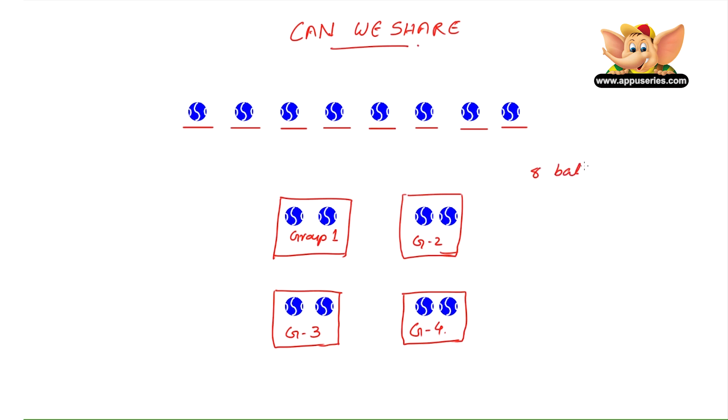So we have divided these eight balls into four equal groups, right? So how many balls are there now in each group? We have two balls in each group. So eight balls were divided into four groups. And each group now has two balls. So if we write this as a problem, it would be eight divided by four equals two.